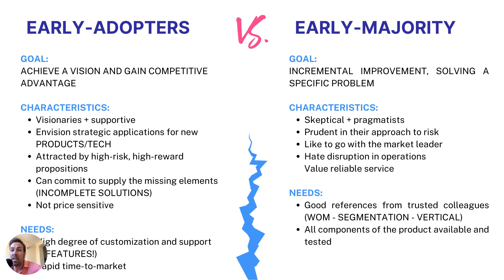Early adopters need a high degree of customization and performance — that's why they ask for a lot of features. They want rapid time-to-market, good performance, and a really good user experience. It's all about the core features of the product. The early majority is very different: they don't care as much about performance or time-to-market. They care more about having good references from trusted colleagues, and they need all components of the product available and tested — they don't want buggy or untested solutions, and they don't want to stay ahead of the curve.